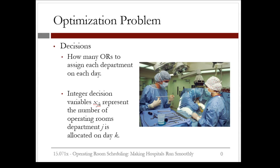In this video, we'll design the optimization problem that the operating room manager would need to solve. The decision to be made is how many operating rooms to assign each department on each day. This means that we need to define integer decision variables X_j_k.